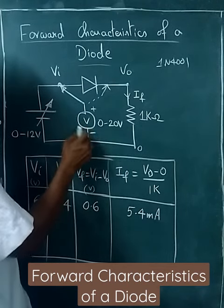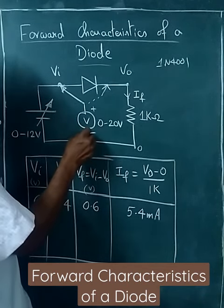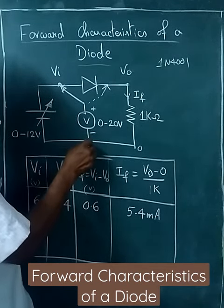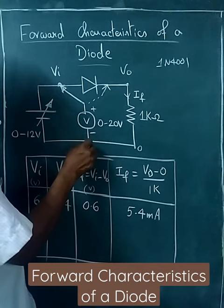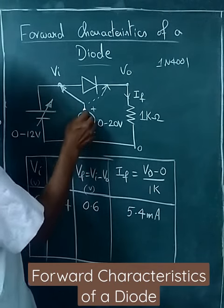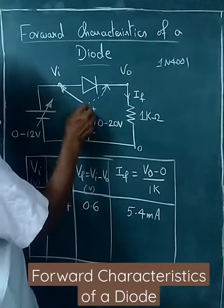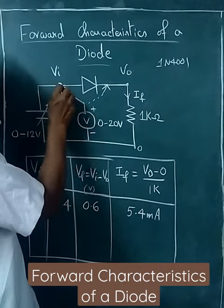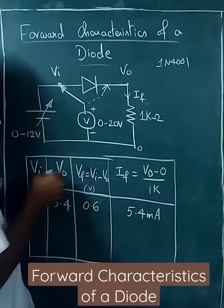First, connect a voltmeter. The negative of the voltmeter is connected to ground — this is 0 volts. Don't remove it. Touch the positive to this side; this will give you V_in.